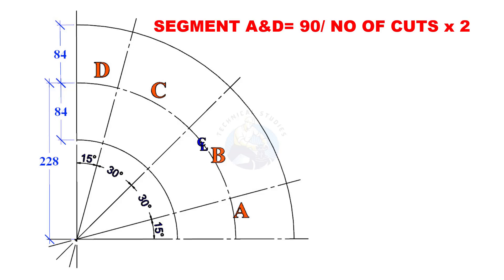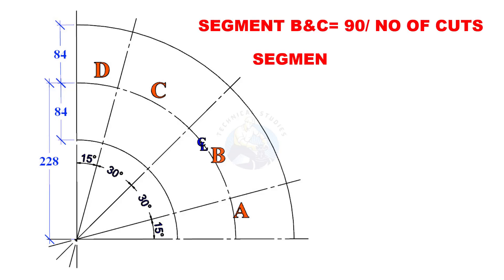To determine the degree of the parts A and D divide 90 degrees by 6. This is a common rule for 90 degree 3-cut mitre bends. To determine the degree of the parts B and C divide 90 degrees by 3.